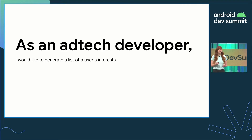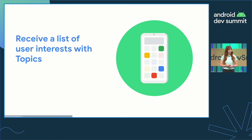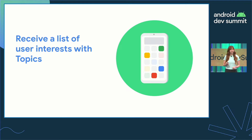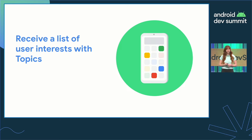Ad tech developers want to know what users are interested in so they can serve ads that are interesting and relevant to the people seeing them. To do this, they can use the Topics API to receive a list of interests relevant to the user of an app. The Topics API infers these coarse-grained interests on-device with added noise to protect user privacy. It is encouraged to start integration with the Topics API and work with advertising partners to include topics in ad requests so they can be used for ad selection.